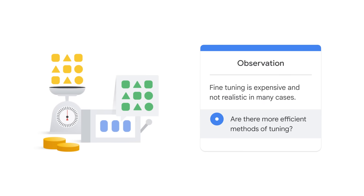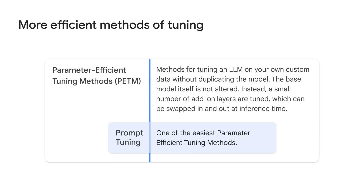Fine-tuning is expensive and not realistic in many cases. So are there more efficient methods of tuning? Yes — parameter-efficient tuning methods, or PETM, are methods for tuning a large language model on your own custom data without duplicating the model. The base model itself is not altered. Instead, a small number of add-on layers are tuned, which can be swapped in and out at inference time.